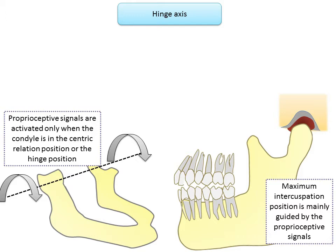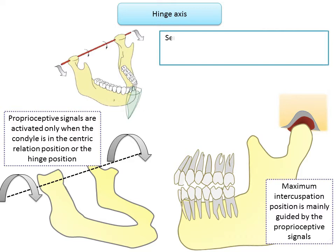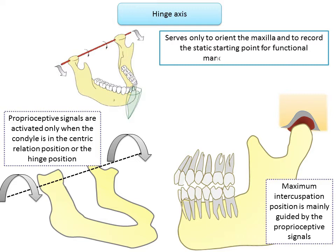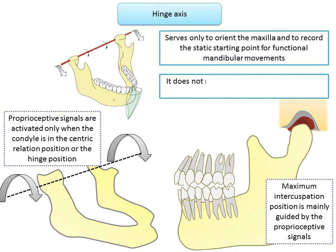On activation, the hinge position can guide the mandible during opening and closing movement — this is why hinge axis determination is essential. The terminal hinge movement is used only to locate the starting point of mandibular opening, not the condylar path itself. The transverse hinge axis plus one anterior point serves to locate the maxilla in space, orienting the maxilla and recording the static point for functional mandibular movements. It does not record centric relation or condylar movements.